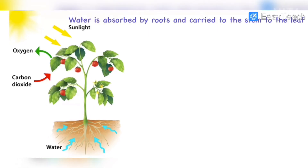Water is absorbed by the roots and carried to the stem, then to the leaves. First, we give water to the soil, then the roots absorb it, carry it to the stem, and the stem passes the water to all the leaves.